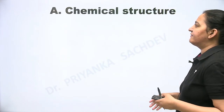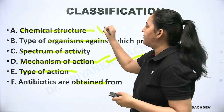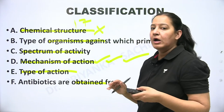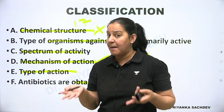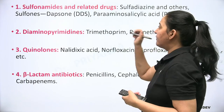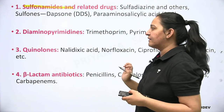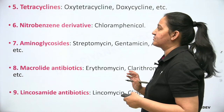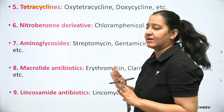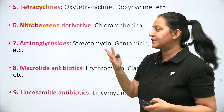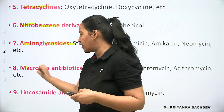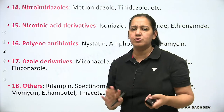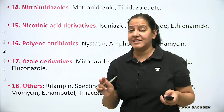The first classification, based on chemical structure, divides antibiotics into 17 groups — though you don't need to memorize this. Sulfonamides have a sulfur group; diaminopyrimidines, quinolones, and beta-lactams have a beta-lactam ring. Tetracyclines have four rings in their structure; nitrobenzene drugs have a nitro-benzene ring. Aminoglycosides, macrolides (with a large ring), and lincosamides are other groups. Just have a look at which antibiotic belongs to which category.